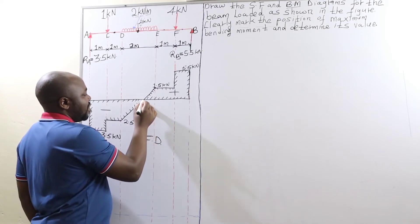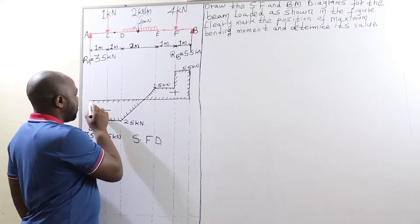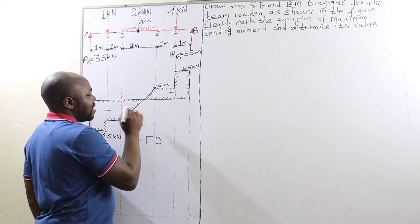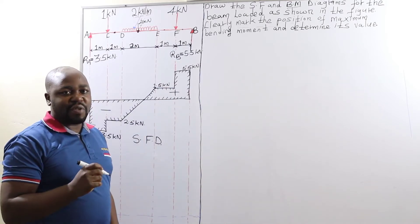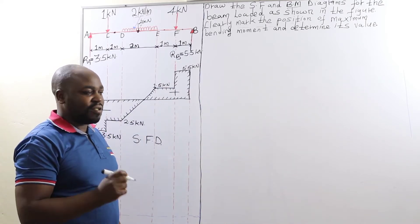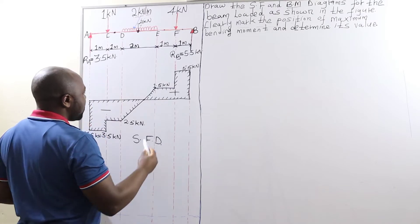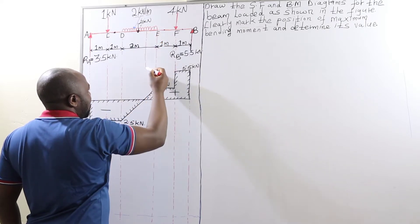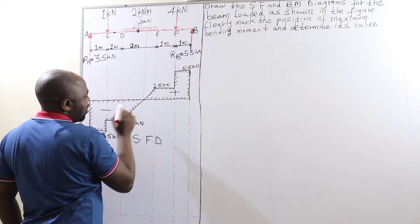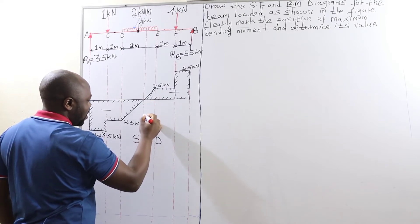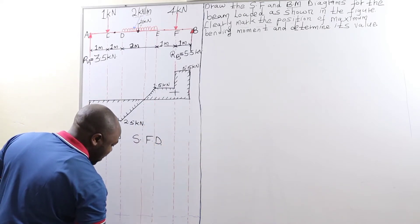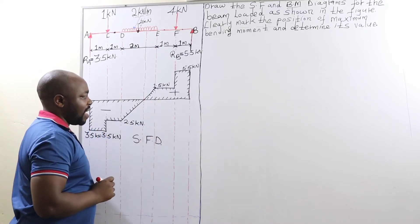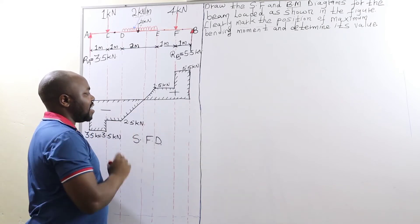Therefore, at this point, this is the line of origin — the zero line — so you can clearly see that this will be the position of maximum bending moment, since that is the point where shear force is zero. We are going to draw a line passing through this point where shear force is zero, so that we can determine the distance from point E all the way to the point where shear force is zero.